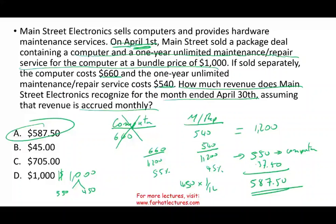Also, if you understand the big picture, you cannot recognize all of the revenue, so you could eliminate B. $45 does not make any sense, so you could eliminate that too. If you have to guess between $587.50 and $705, I would guess $587.50 because part of the contract is recognized on a monthly basis. This is if you're working through it quickly.